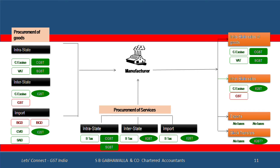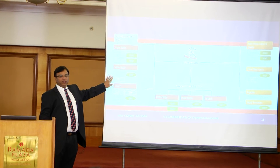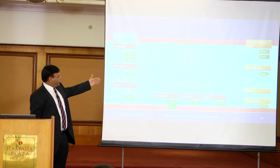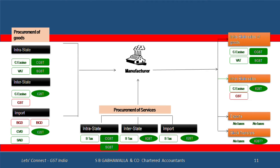This is where you'll see a change: on interstate purchases there's excise and CST. Against Form C you charge 2%; if you are not able to give Form C then the vendor charges you 12.5%. This CST today is not available as a credit. Both of these taxes get replaced by IGST, which is fully available as a credit — so this red part goes away, and that's a benefit available to the manufacturer.